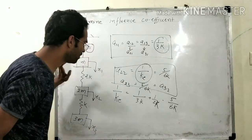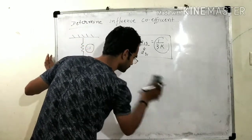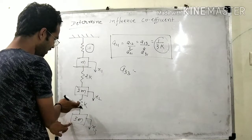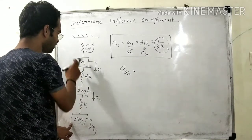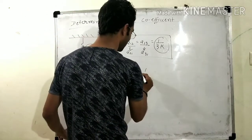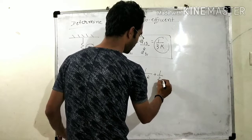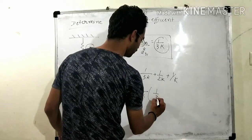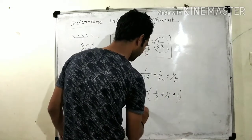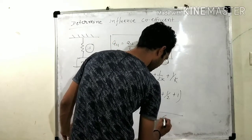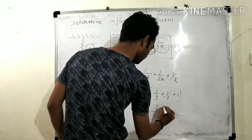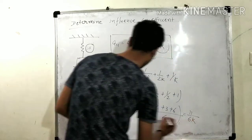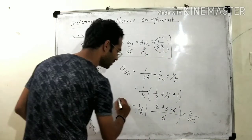For A33, there are three springs in series. So 1/Ke = 1/3K + 1/2K + 1/K. Taking 1/K common: 1/3 + 1/2 + 1 = 2/6 + 3/6 + 6/6 = 11/6. Therefore A33 = 11/6K. That is very easy.